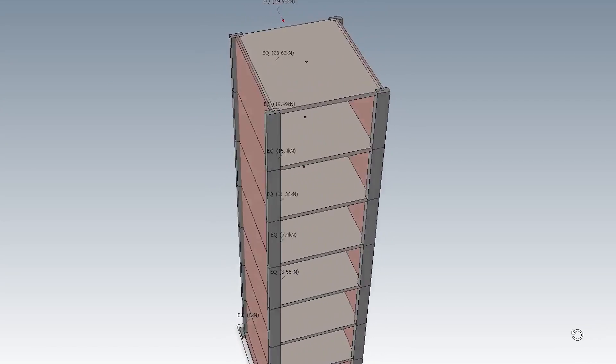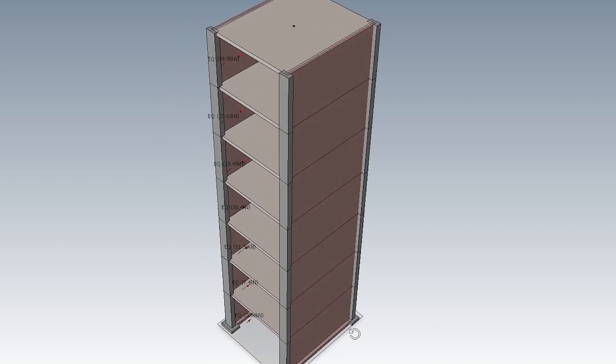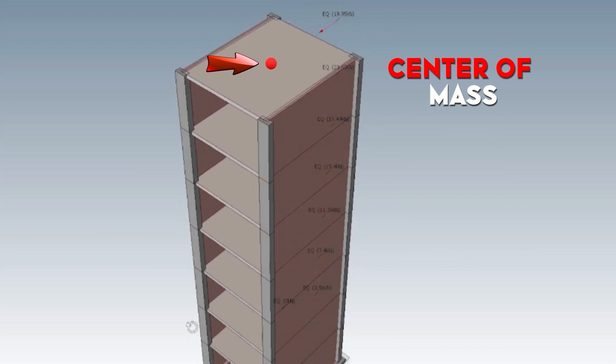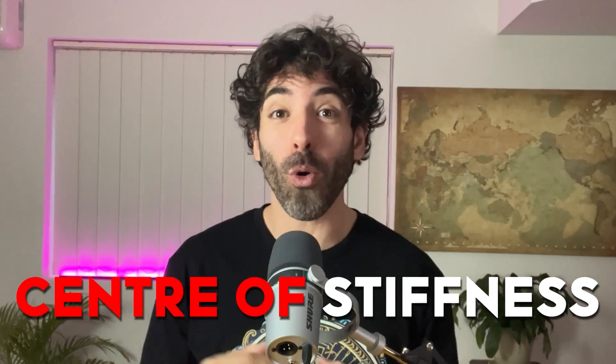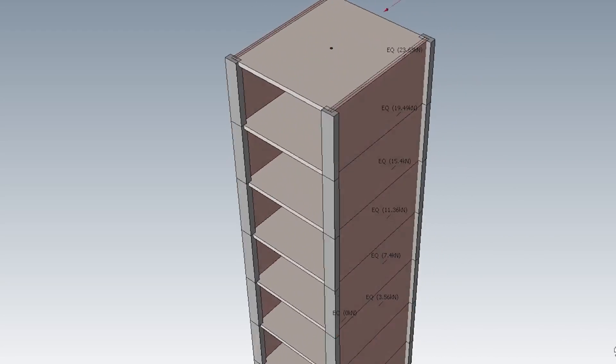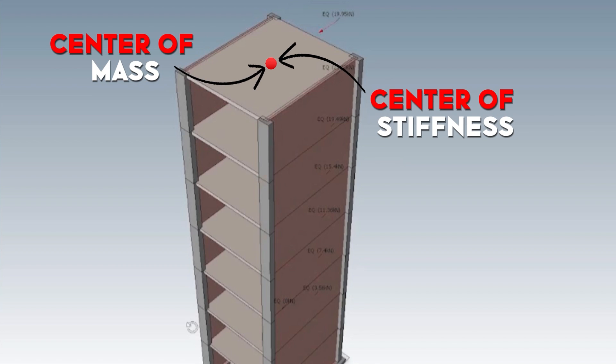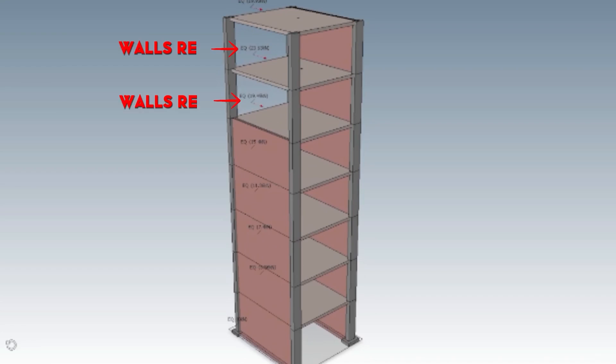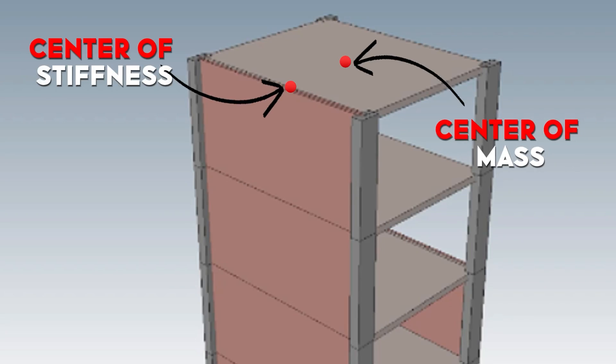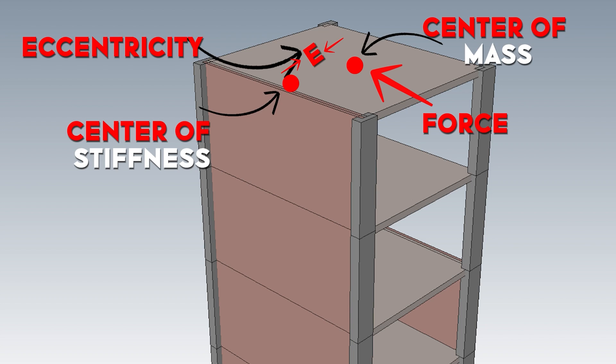In this example, since the building is symmetrical and there's no concentration of mass in any specific area, the center of mass is exactly at the center of the building. Another concept we have to understand is the center of stiffness or rigidity. The center of stiffness refers to the centroid of the lateral stability system. In this example, the center of mass and stiffness are in the same spot because the walls are well distributed for the forces in the x direction. If we start removing walls, the center of stiffness will shift towards where the walls are located, which is away from the center of mass. When an earthquake hits, the force acting on the center of mass will start twisting the building because of this eccentricity between the center of mass and the center of stiffness.